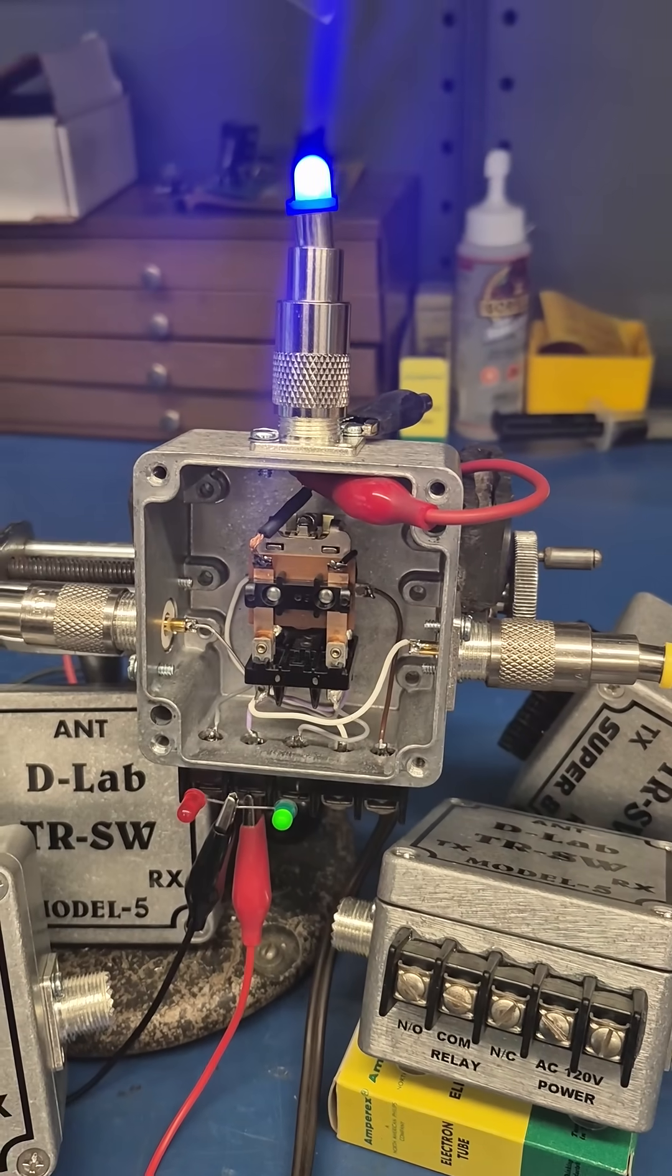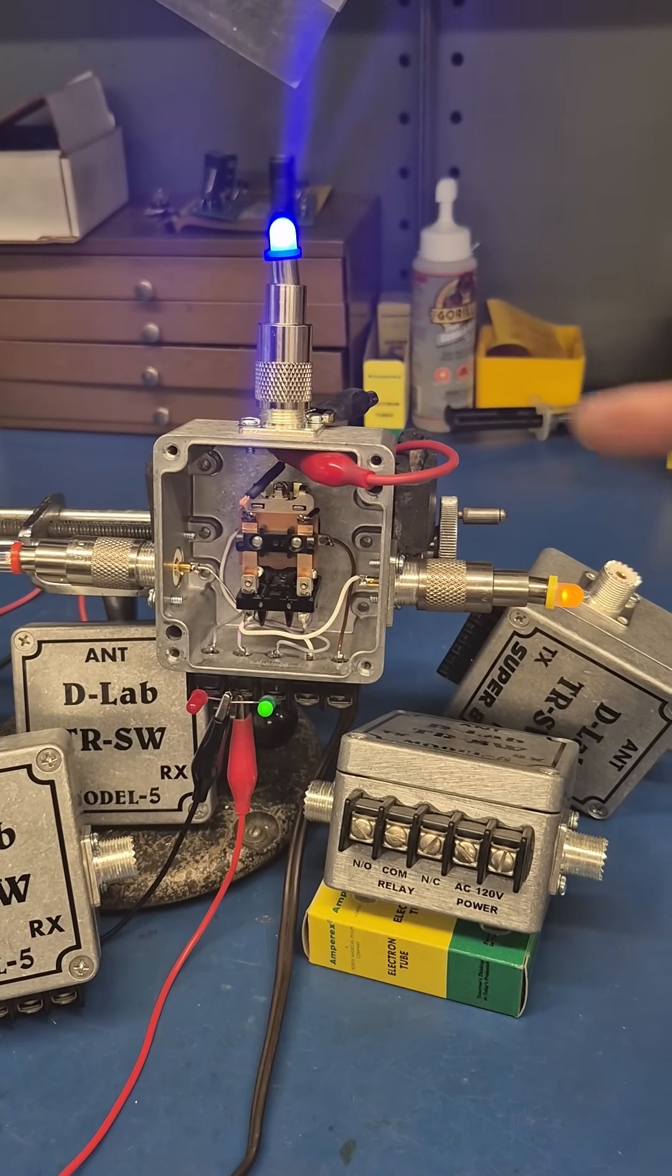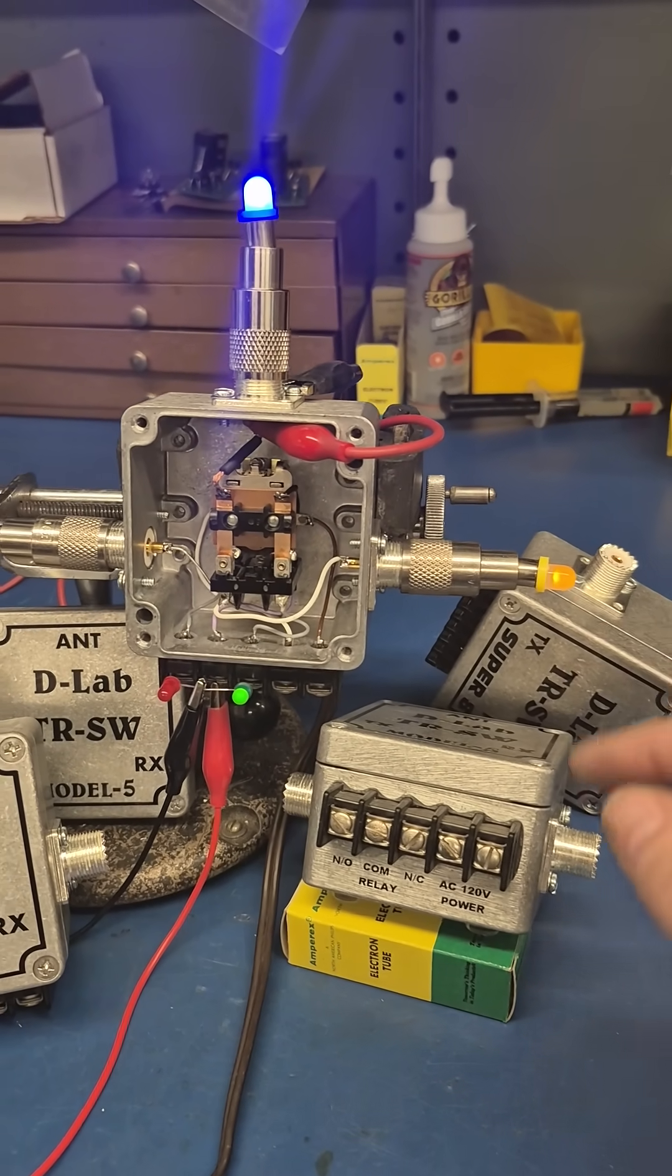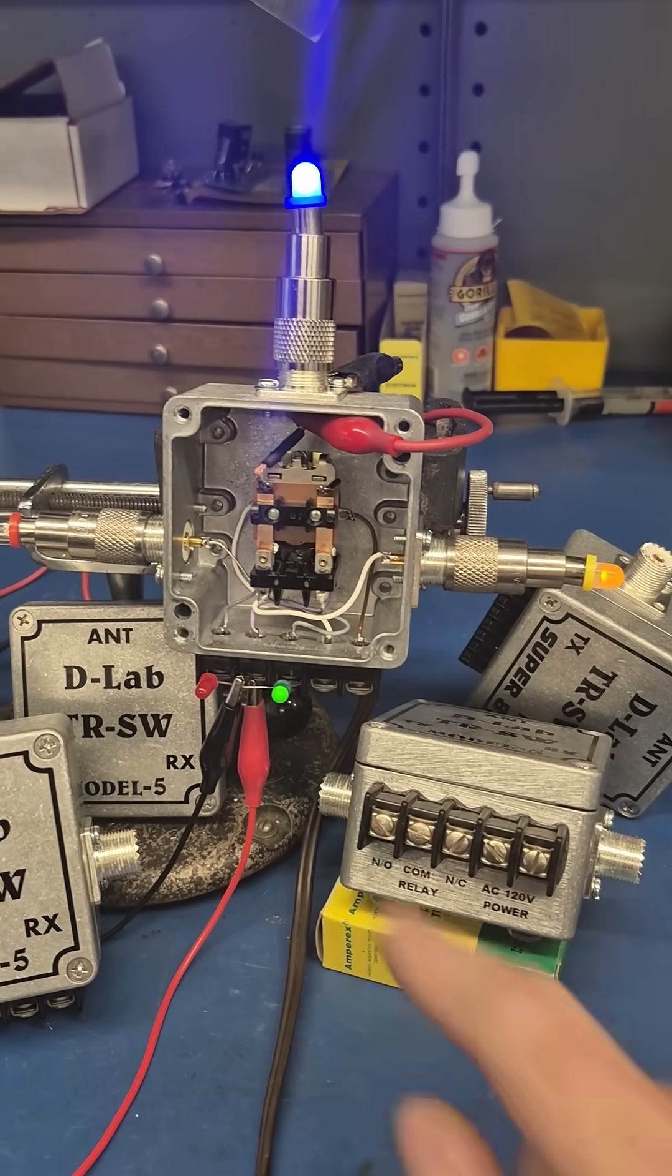Let's test. So currently the TR switch is in receive mode. This is my antenna and this is the connector that goes to your receiver and you can see we have a contact closure here.